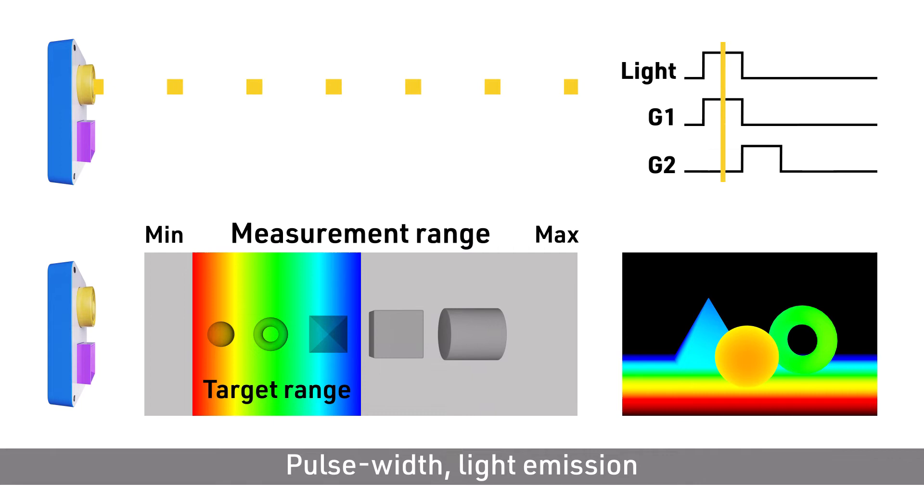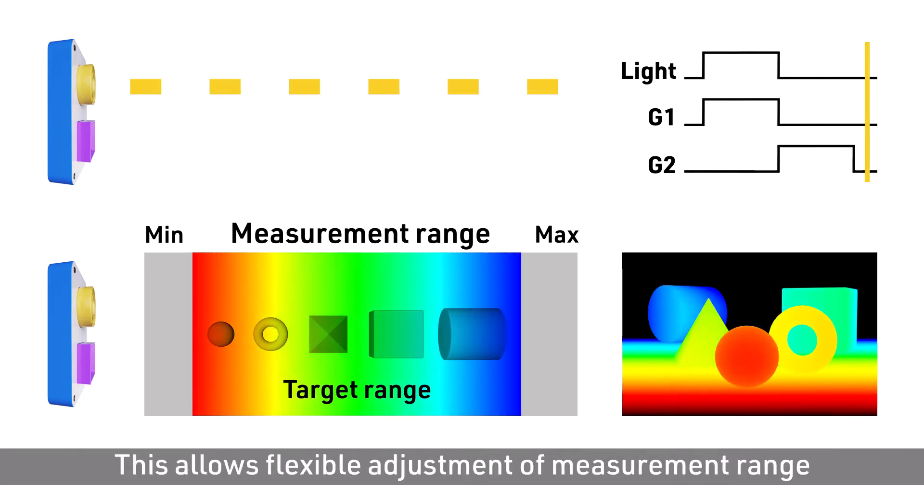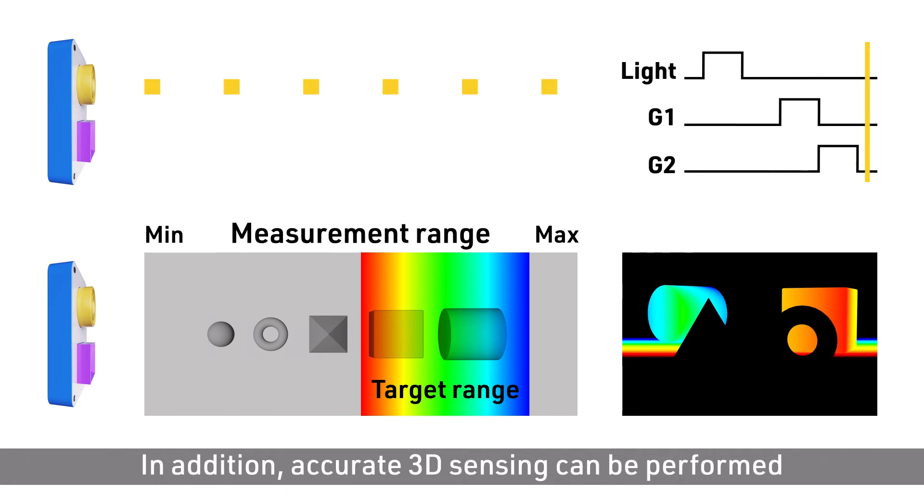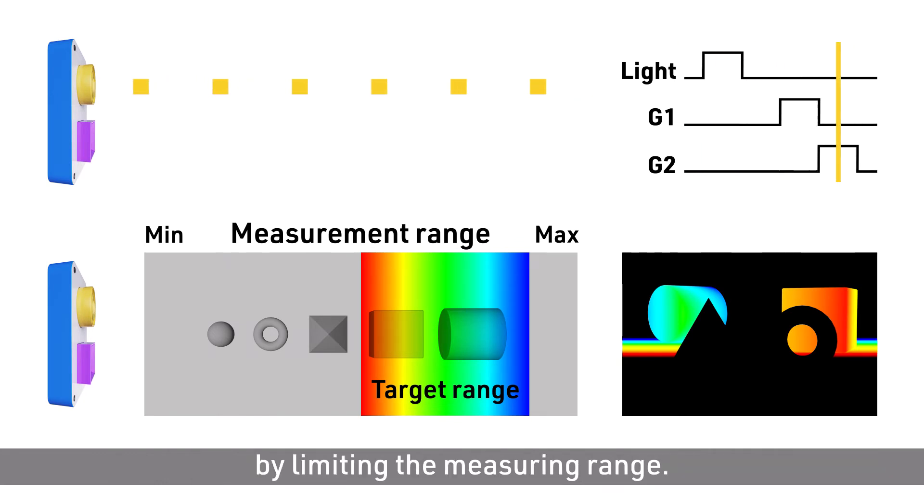Pulse width, light emission, and sensor timing can be controlled easily. This allows flexible adjustment of measurement range to match the purpose of use. In addition, accurate 3D sensing can be performed by limiting the measuring range.